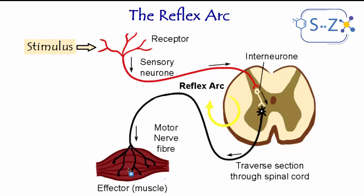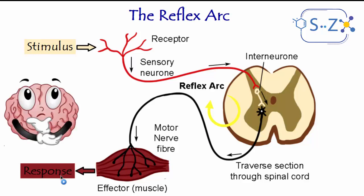Then the nervous message continues through the motor neuron until the effector, where the response takes place. But the question is: how did they know that this is the route of the nervous message? What are the experiments done to prove that these are the elements of the reflex arc and this is how the nervous message moves?